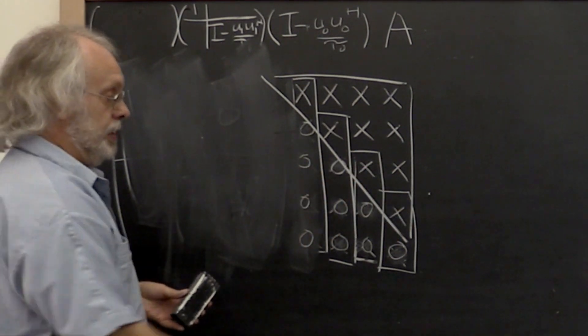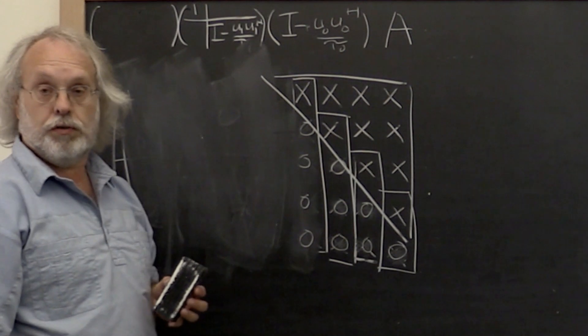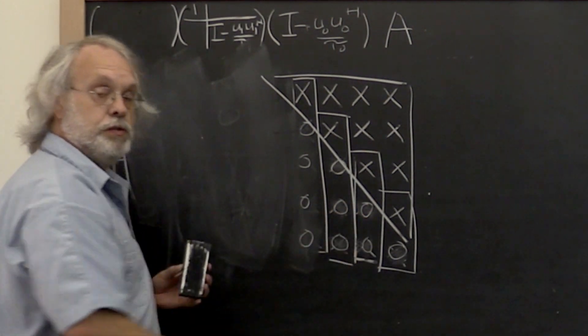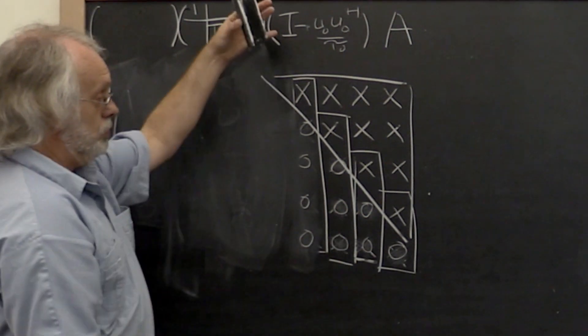Since we started with a rectangular matrix we also ended up with an extra row of zeros. Obviously we'd have more rows of zeros if the matrix was more rectangular.